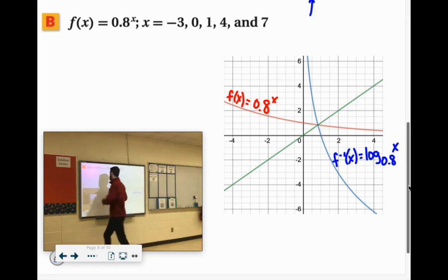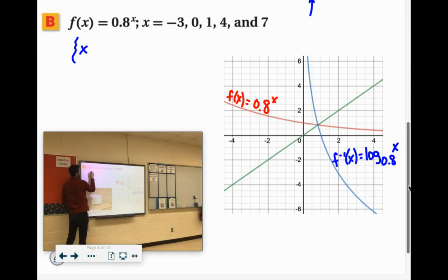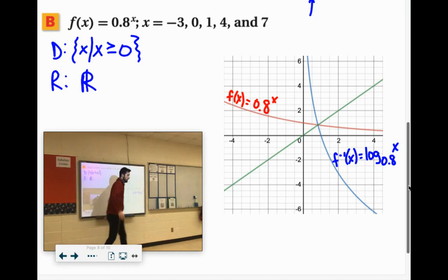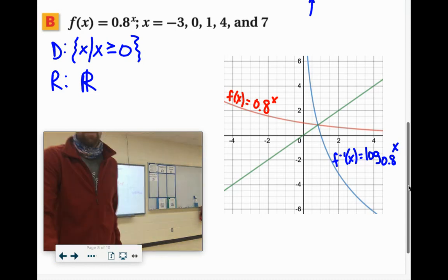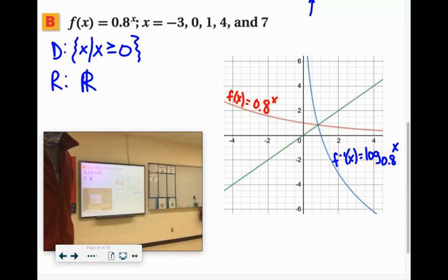So again, domain, if you look at all the x values, they're all greater than 0. So we'll say x, so that x is greater than or equal to 0. That's our domain. And the range for this would, again, be all real numbers. Because the y's could be anything.